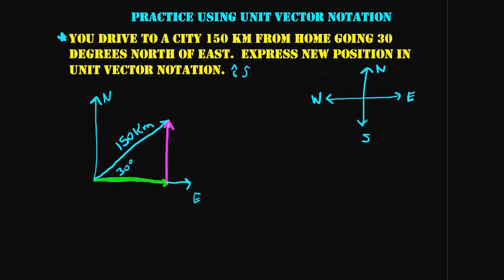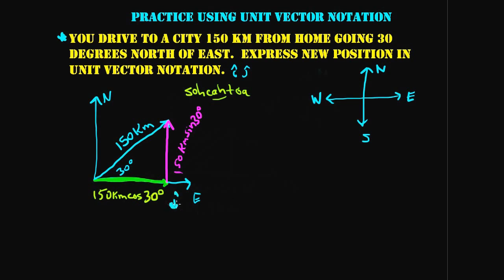All we have to do is add those components together to get this vector — we learned that in the vector addition video with the tip-to-tail method. Using SOHCAHTOA, the x-component is the adjacent side to the angle, so it's 150 kilometers times cosine of 30 degrees, and the y-direction is 150 kilometers times sine of 30 degrees. We express these in unit vector notation: the x-direction is the i-hat direction.